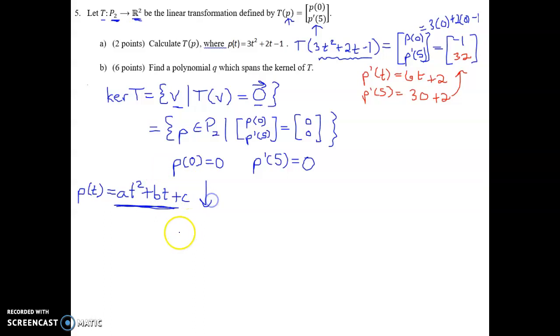If I now substitute 0 for T, then I've got A times 0 squared plus B times 0 plus C equals 0. So this is 0 plus 0 plus C, so C equals 0. That's what we learn there.